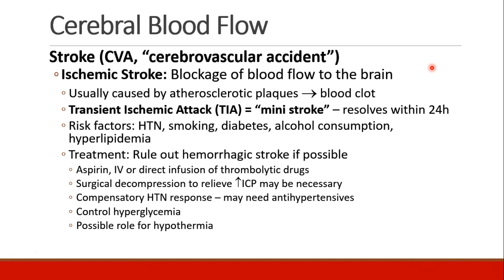The first step when a patient presents with a stroke is to make sure it's not a hemorrhagic stroke, usually done by CT scan. Assuming it's not hemorrhagic, we give aspirin, and may give IV infusion of thrombolytic drugs or direct infusion through angiography. Surgical decompression of the skull may be necessary to decrease intracranial pressure. When patients have ischemia to the brain, the normal body response is hypertension to try and increase perfusion. We should also control hyperglycemia, and some people have looked at deliberate hypothermia to protect brain tissue by decreasing CMRO2.